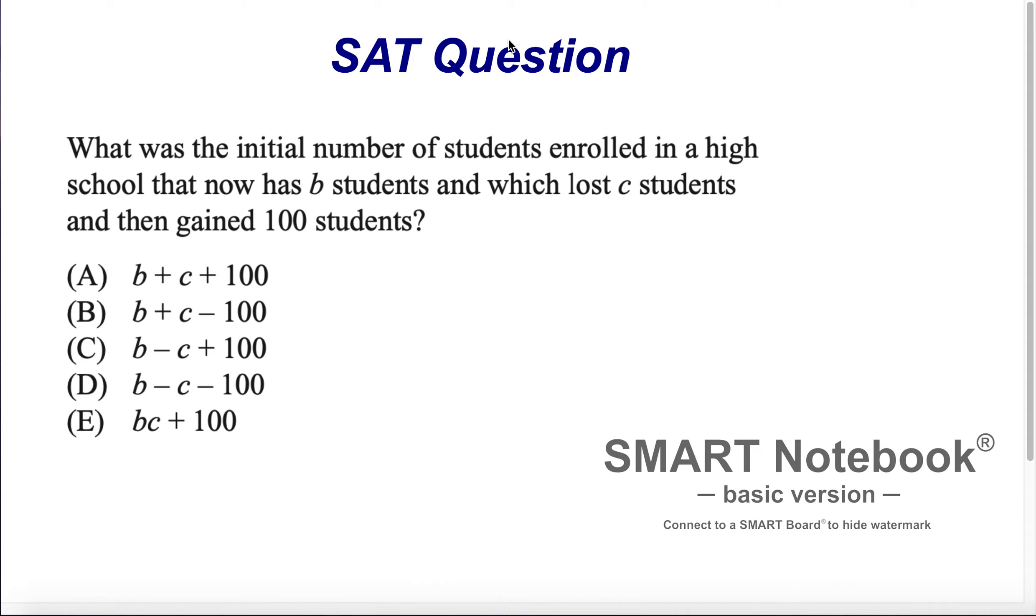As we know here, we want to look for the initial number of students enrolled in a high school. But now, how many students are there? Now it has B students. Let's say B students is here. Let me write it with a B here. It represents how many students are now.